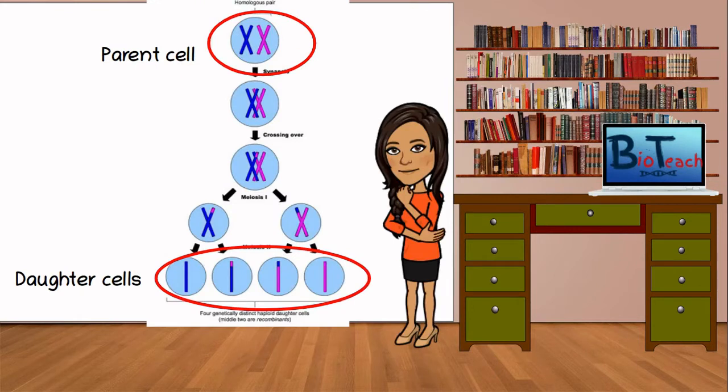In meiosis, we have the parent cell, which is in that red oval at the top. After meiotic divisions, we end up with four daughter cells, all of which are different from each other. We know that they're different, because if you look at the colour of the lines inside of the circles, which represent the cells, they're all different. You've got one blue, you've got a blue and a pink, you've got a pink and a blue, and then you've got a pink one. So all of those are completely different from each other.